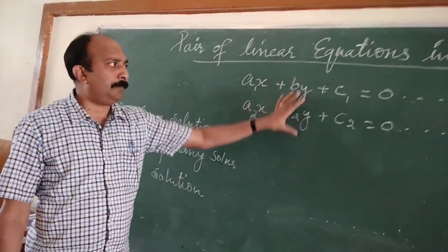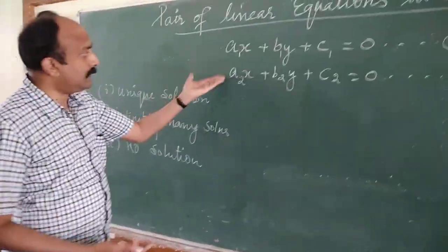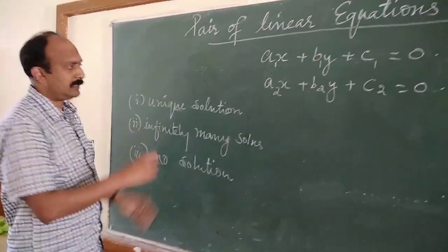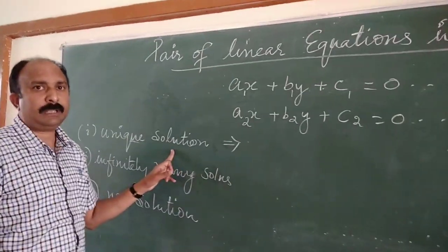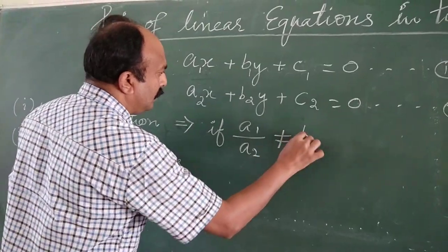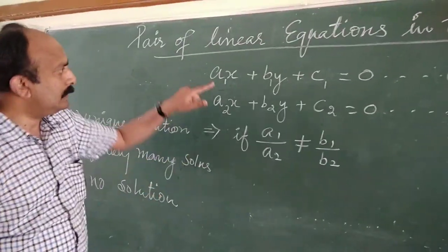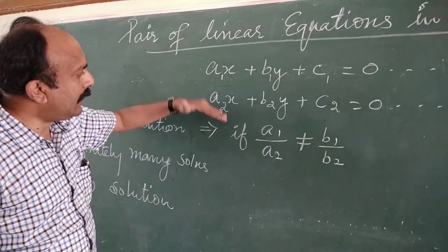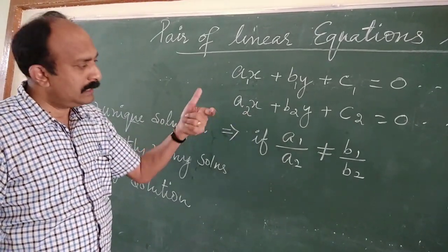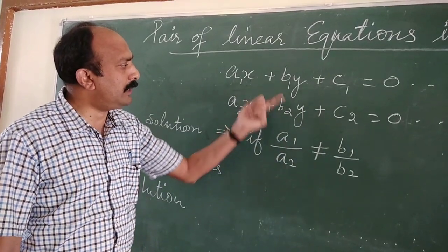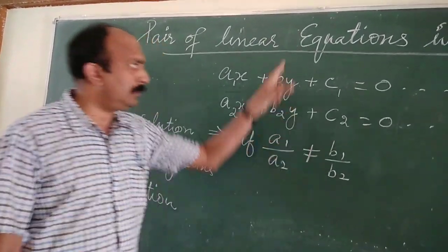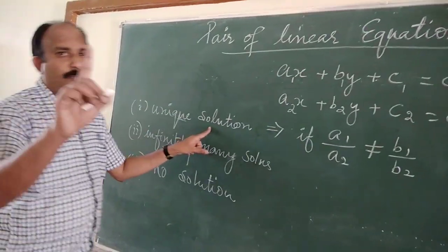Without actually solving a pair of linear equations, we can check whether it has unique solution, infinitely many solutions, or no solution. For unique solution, the condition is: if a1 upon a2 is not equal to b1 upon b2 — that is, the ratio of coefficients of x from both equations is not equal to the ratio of coefficients of y — then this system will have a unique solution: one value of x and one value of y.